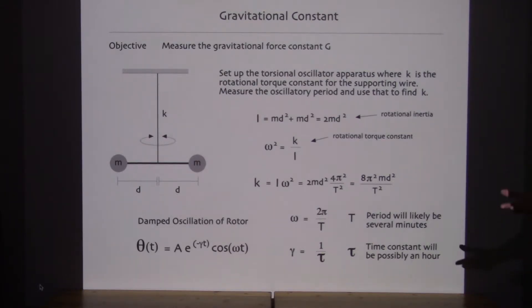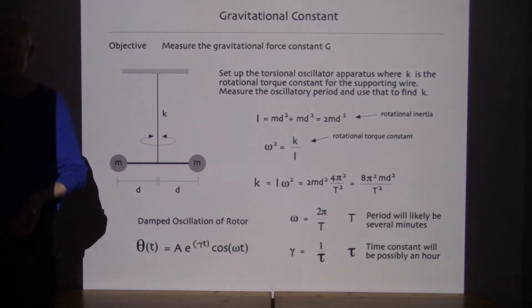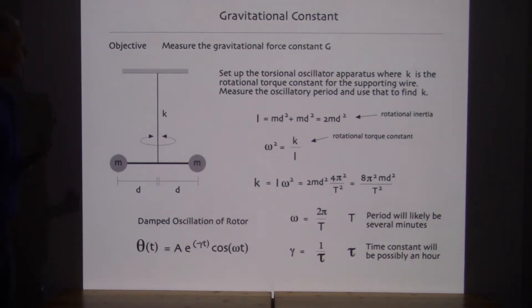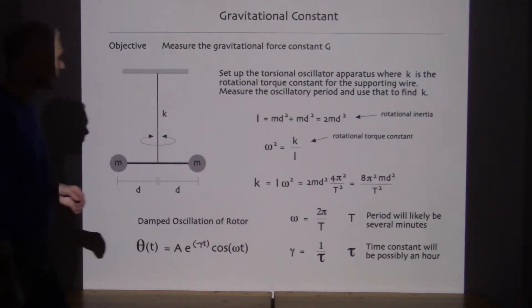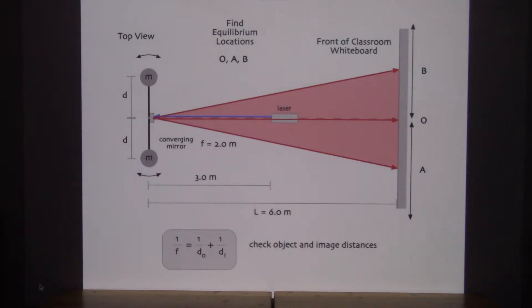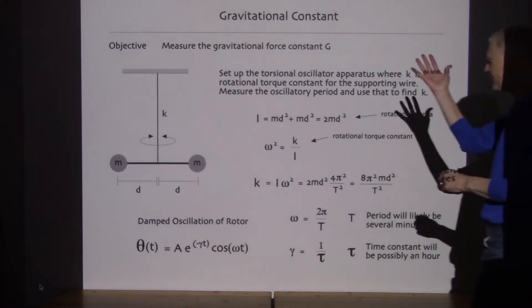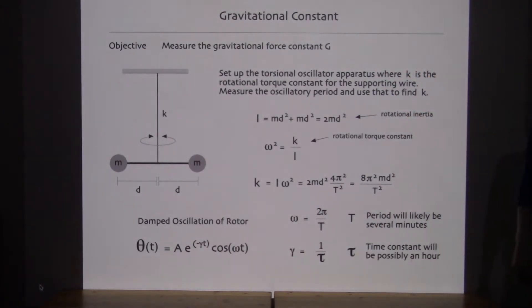It's got some similarities to the speed of light lab that we also did earlier this semester, in that it's just one setup for the whole class. We'll get this thing set up on one of the benches. Now, from a side view, this thing is going to oscillate back and forth in a horizontal plane.